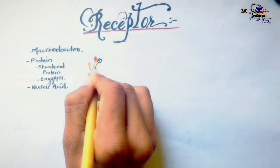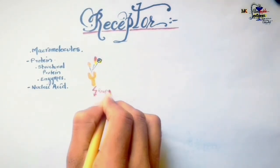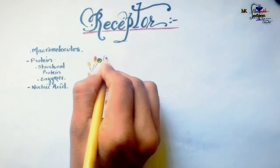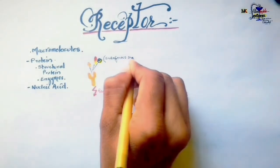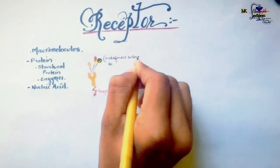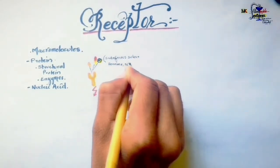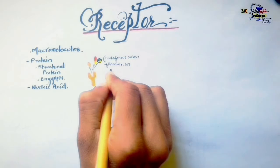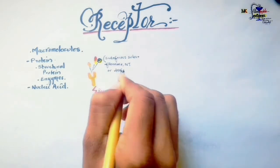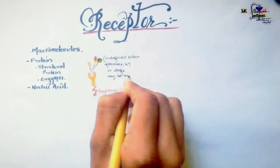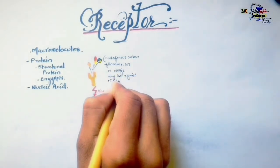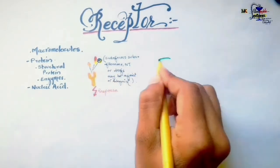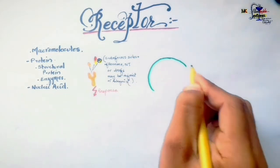The drug which binds to a receptor may be an agonist or an antagonist. An agonist enhances the activity of the endogenous substances, while an antagonist blocks the activity of endogenous substances like neurotransmitters and hormones.